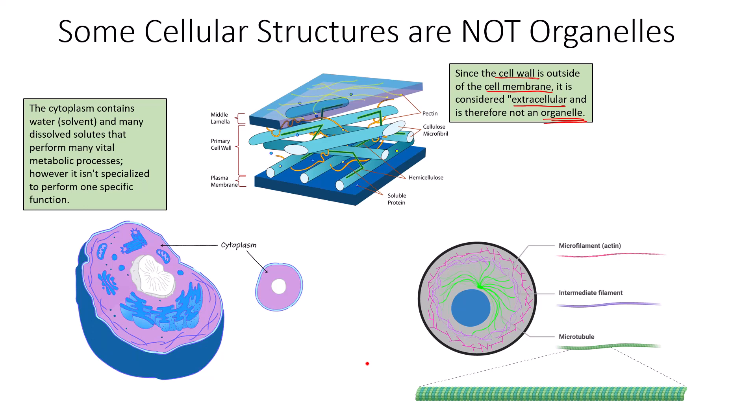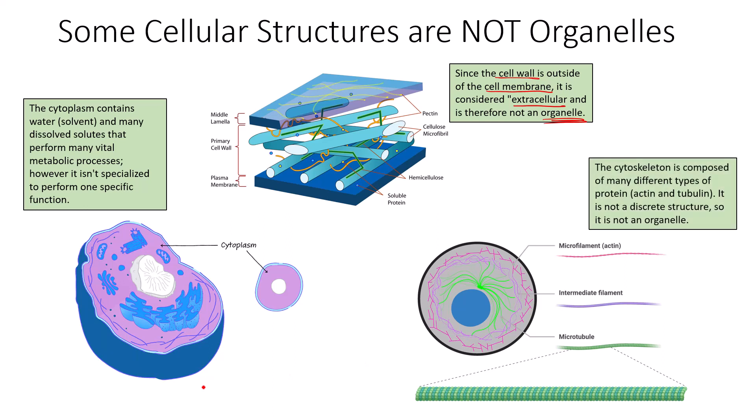Another structure not considered an organelle is the cytoplasm. The cytoplasm contains water as the solvent and many dissolved solutes that perform vital metabolic processes; however, it isn't specialized to perform one specific function and therefore is not considered an organelle. Since organelles need to have a specific function, and the cytoplasm doesn't have its own specific function — it just contains all the solutes and enzymes that catalyze biological reactions and give the cell its shape and substance — it is not considered an organelle.